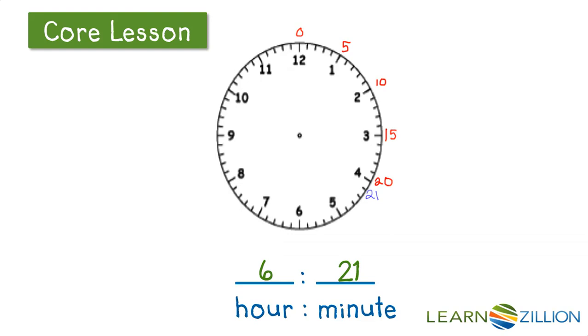0, 5, 10, 15, 20, 21. And now I know which hash my minute hand is going to be pointing to and I can draw it.